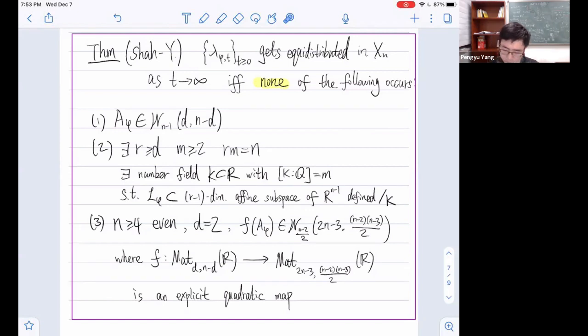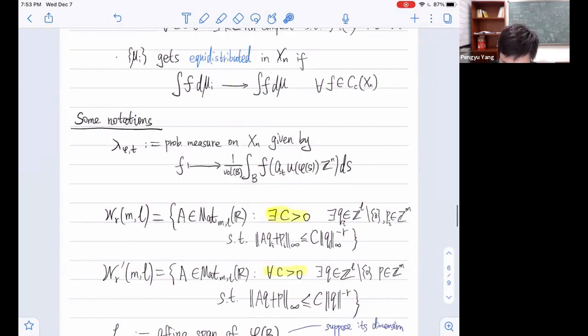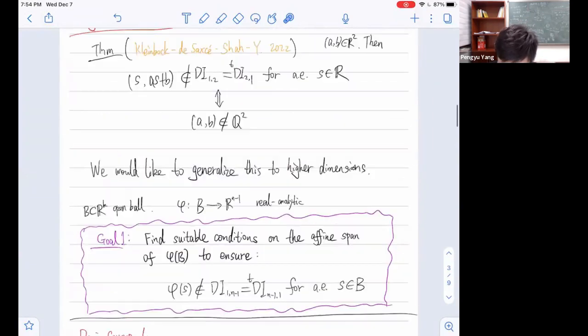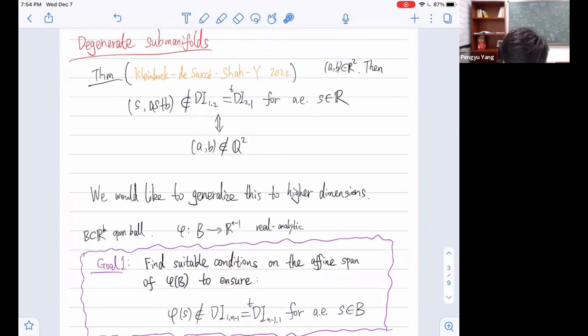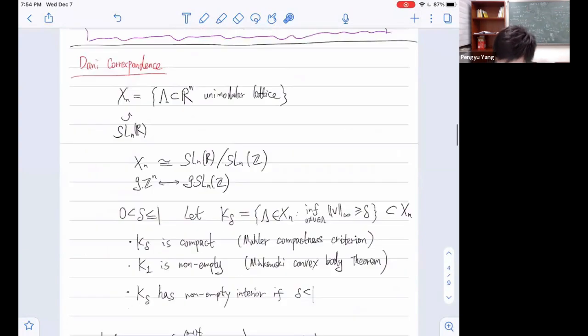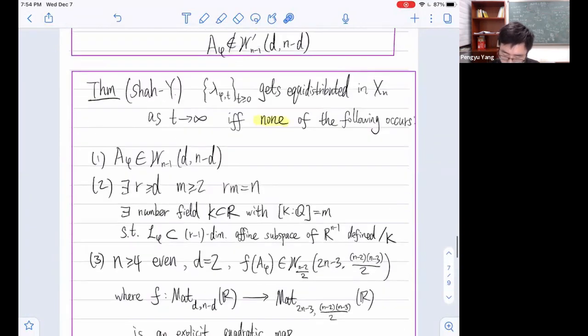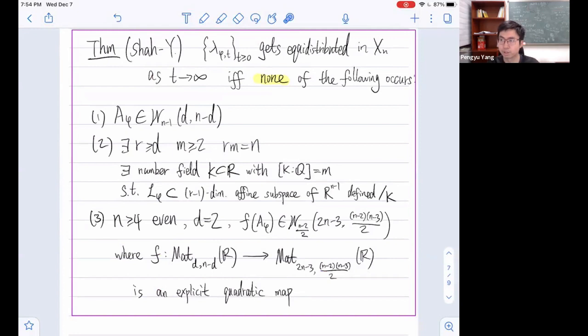The final comment I would like to put here is that this does not seem to be an if-and-only condition for almost everywhere Dirichlet non-improvability. Though in three-dimensional case, we were able to get a full criterion for Dirichlet improvability. But here, this is just an if-and-only condition for equidistribution. It doesn't seem to be the if-and-only condition for Dirichlet improvability. If one would like to get a necessary and sufficient condition for Dirichlet improvability, then one would probably need to classify all the limiting measures. This is something that might be interesting in future research. Okay, so I'll stop here. Thank you.